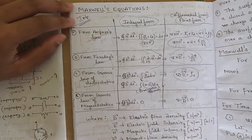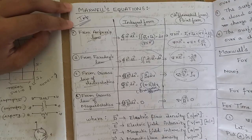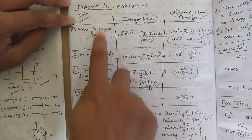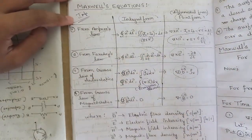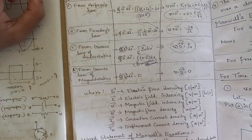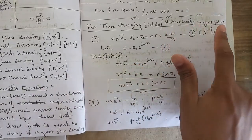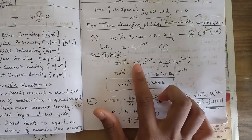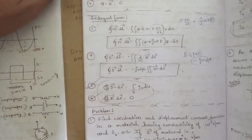Maxwell's Equations is a cash-grab question — study this and you can put eight marks in your pocket. Write all four equations — from Ampere's Law, Faraday's Law, Gauss's Law of electrostatics, and Gauss's Law of magnetostatics — in both integral form and point form, with unit representations: six to seven marks guaranteed. For eight to ten marks, represent Maxwell's equations for harmonically varying (time-changing) fields by substituting E = E₀ e^(jωt) in point form and integral form.